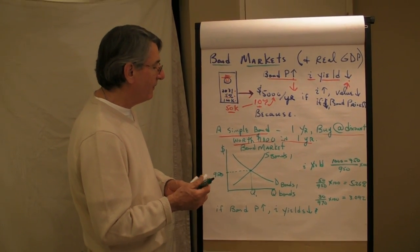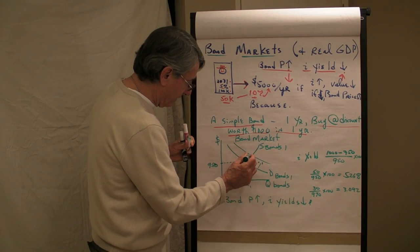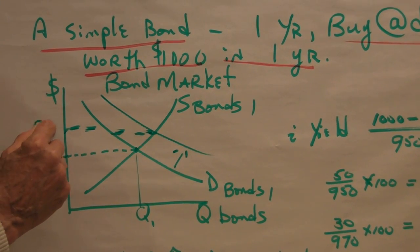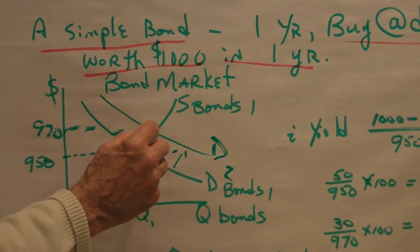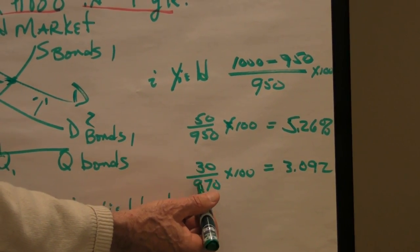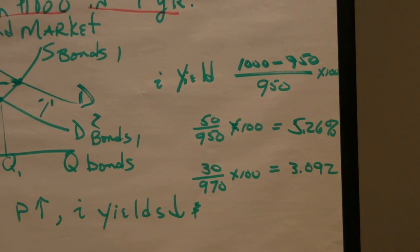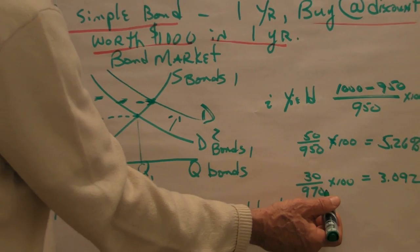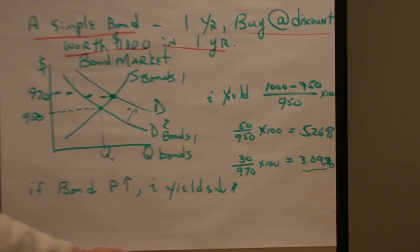Now, what would happen if the supply decreases or the demand increases? I just have it teed up here for the bond price to go up to $970. Well, because of changing market conditions, the bond price goes up to $970. It means now, when it turns to $1,000, you will have made $30. That is the difference between what you paid for at 970 and what you received at the end of the year. You paid $970 to get that $30 yield times 100. This is 3.09% interest yield on it.